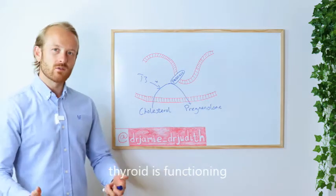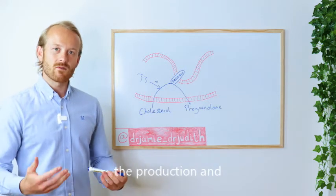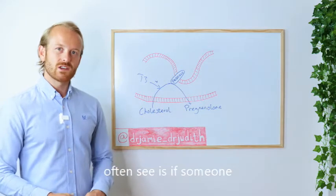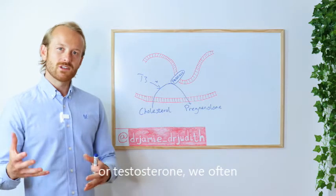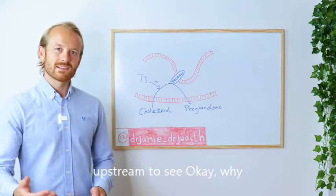So if our thyroid is functioning properly, it helps with the production and upregulation of steroid hormones. What we'll often see is if someone has issues with estrogen or testosterone, we often need to look further upstream to see why is that happening.